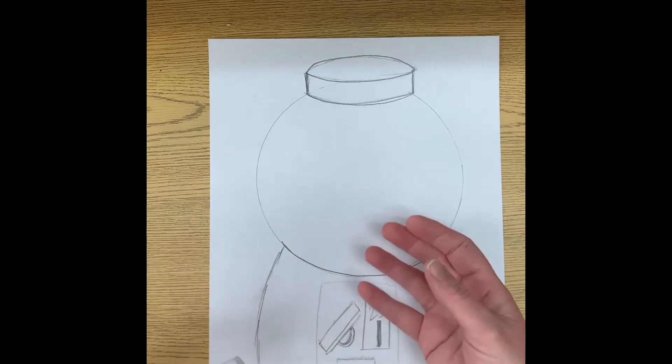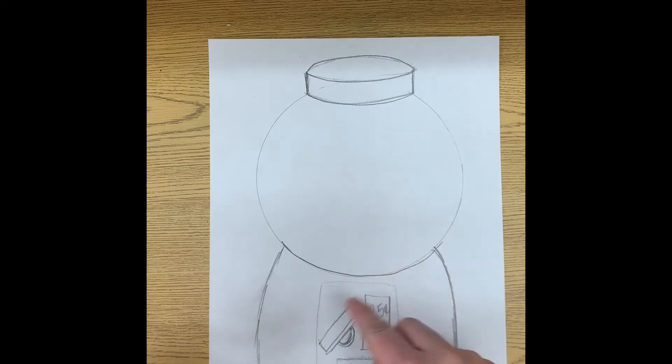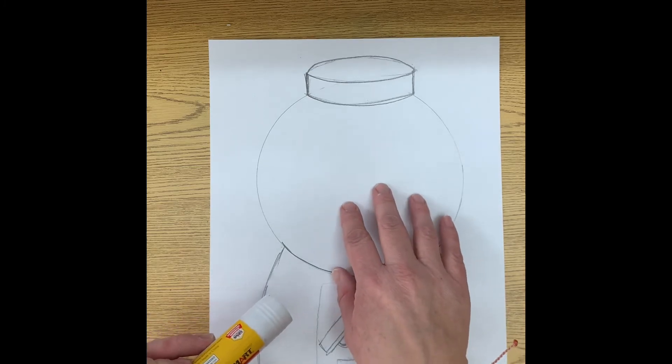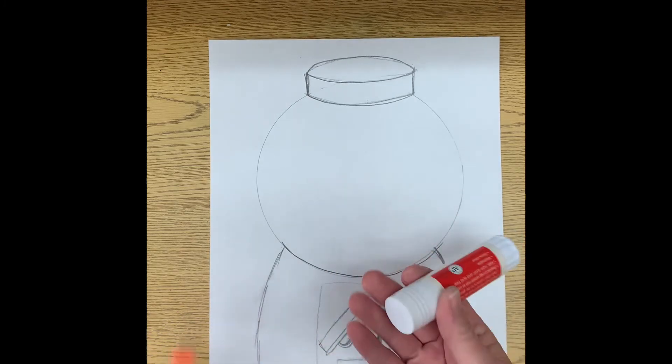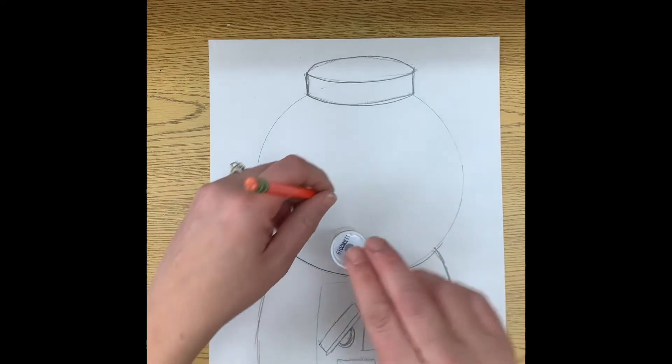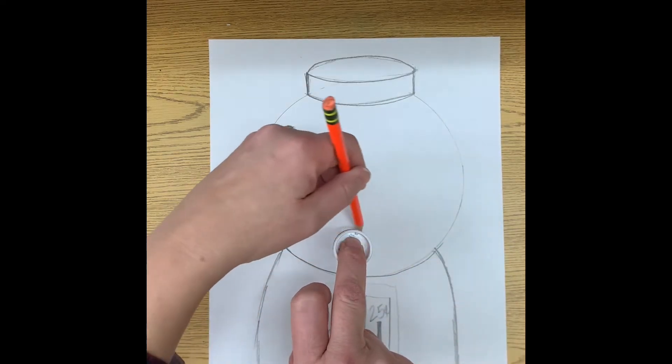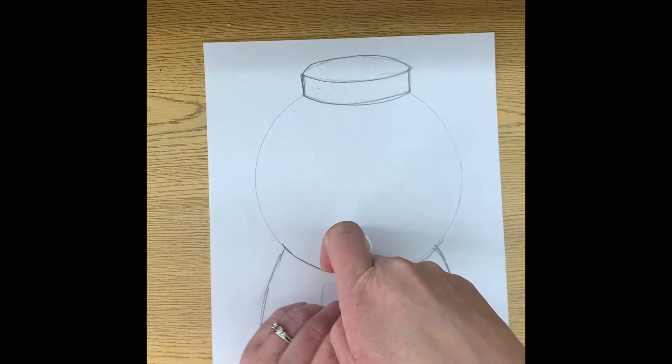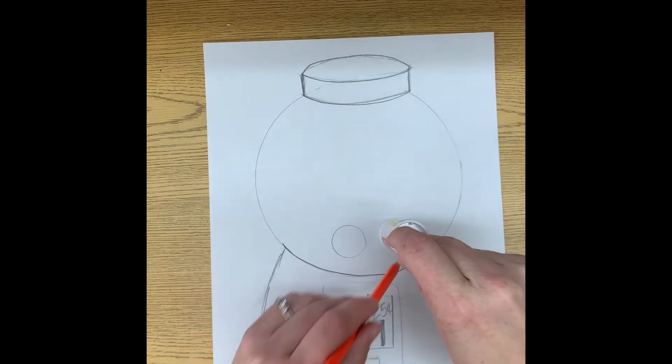So if we know one gumball's in front, we're going to see the whole gumball. But if there's a gumball behind it, we'll only see parts of it. So I'm using a glue stick. You can use something that is round. And all you have to do is trace your circle and just add as many circles as you can.